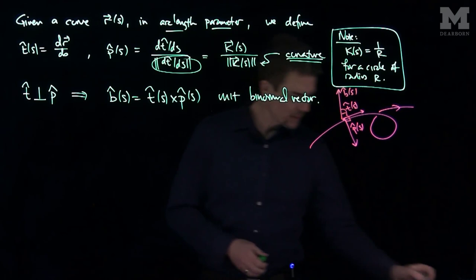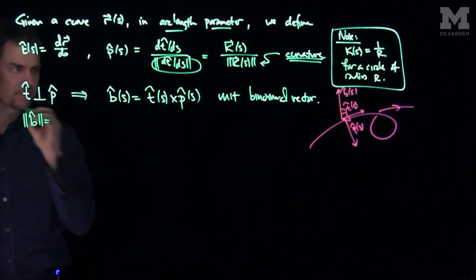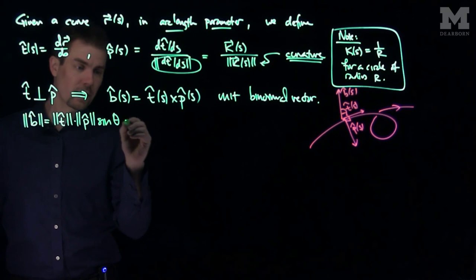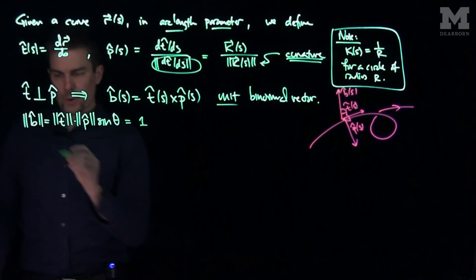And so these t, p, and b form a frame. And we can, of course, note that the length of b-hat, it should be a unit vector. Let's check that: it's the length of t, which is a unit vector, so one, the length of p, one, times the sine of the angle in between t and p. But the angle between them is 90 degrees since they're perpendicular, so this is all equal to one. So indeed this is a unit vector.